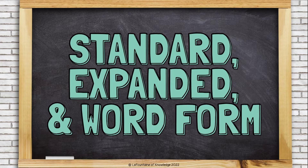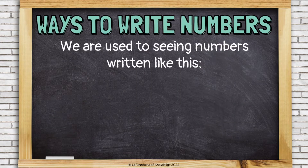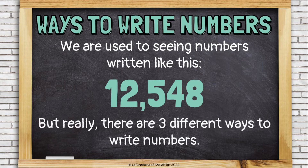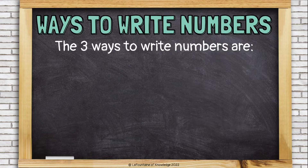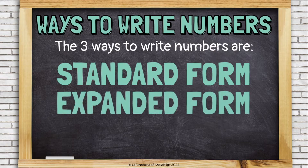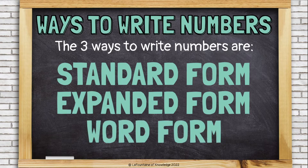Standard, Expanded, and Word Form. We're used to seeing numbers written like this: 12,548. But really, there are three different ways to write numbers. The three ways to write numbers are Standard Form, Expanded Form, and Word Form.